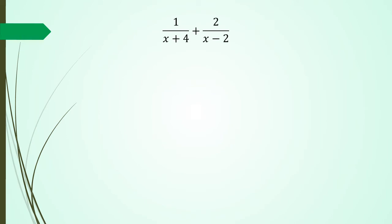So let's have a look at the first question. I've got 1 over x plus 4, plus 2 over x minus 2. Now if you've been following this series, you know in this case you've got to find the lowest common multiple between those two denominators. So I've got x plus 4 and x minus 2, and the lowest common multiple is going to be when you multiply these two together.